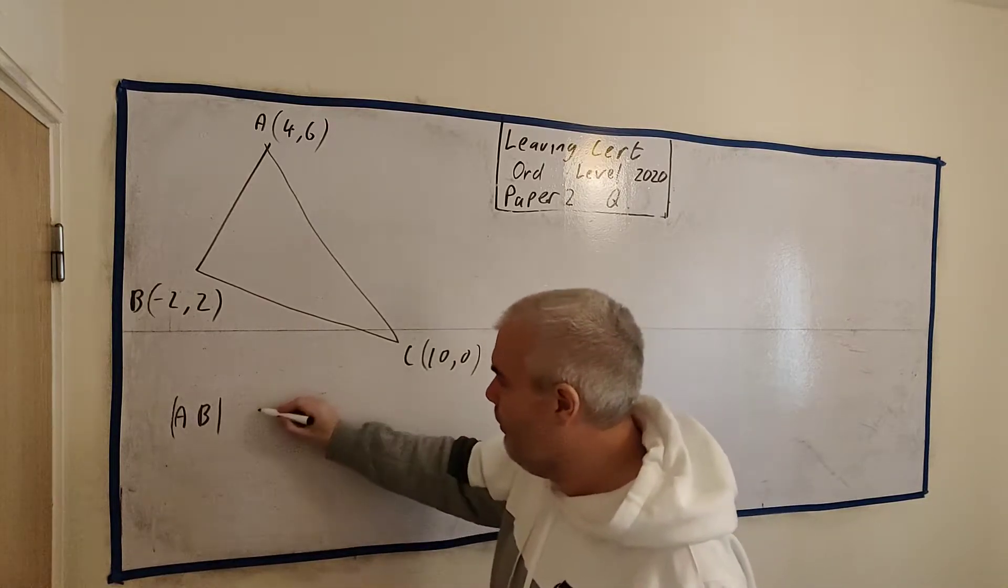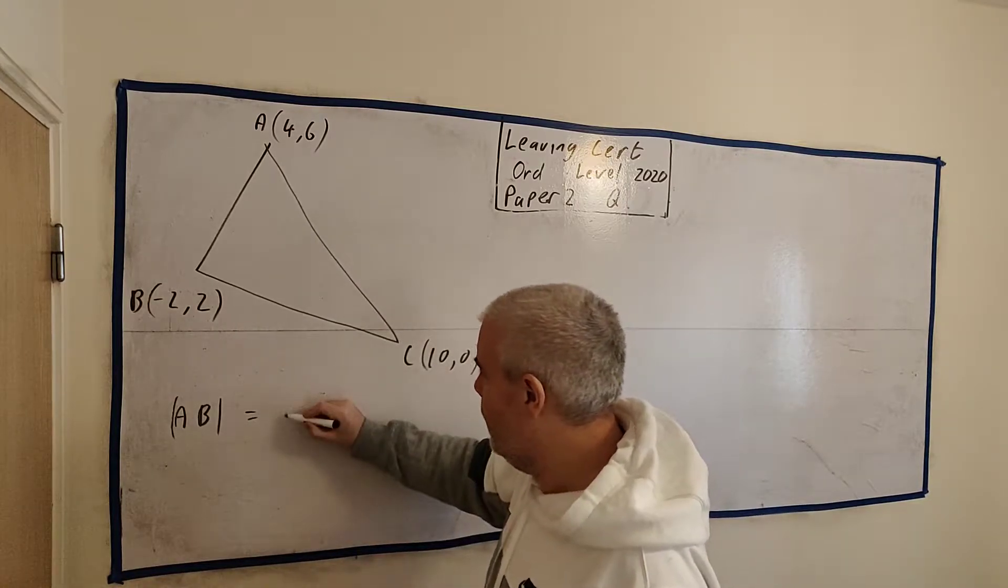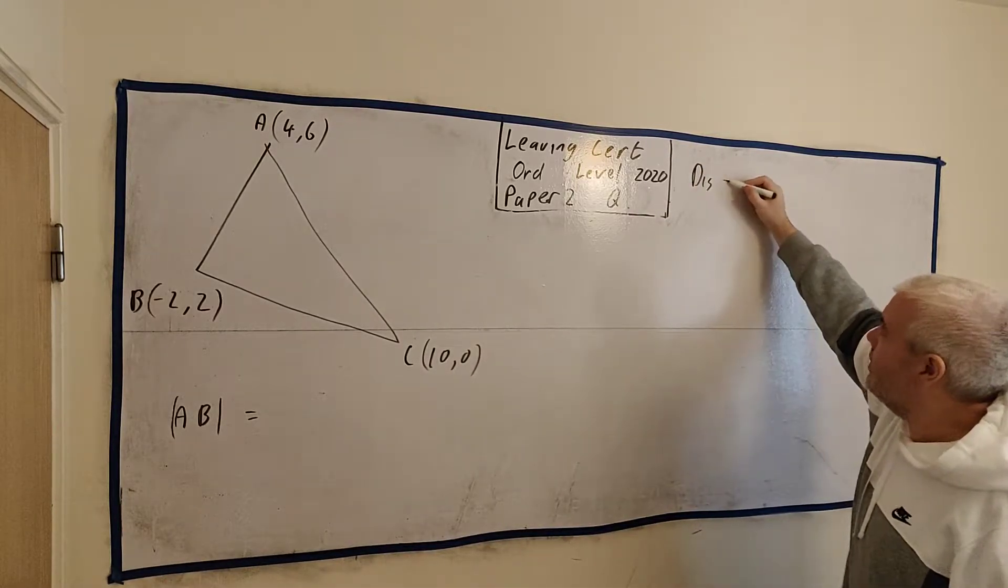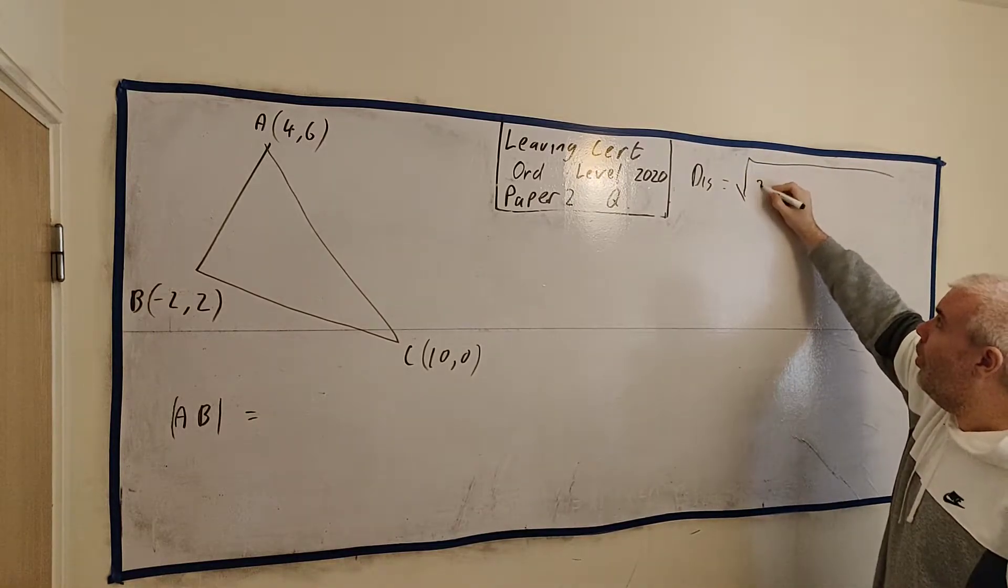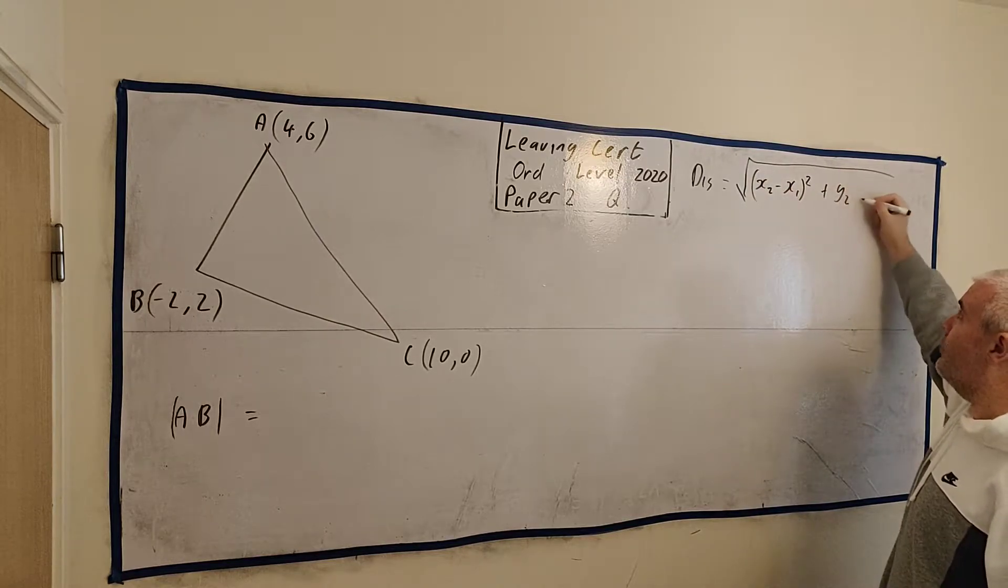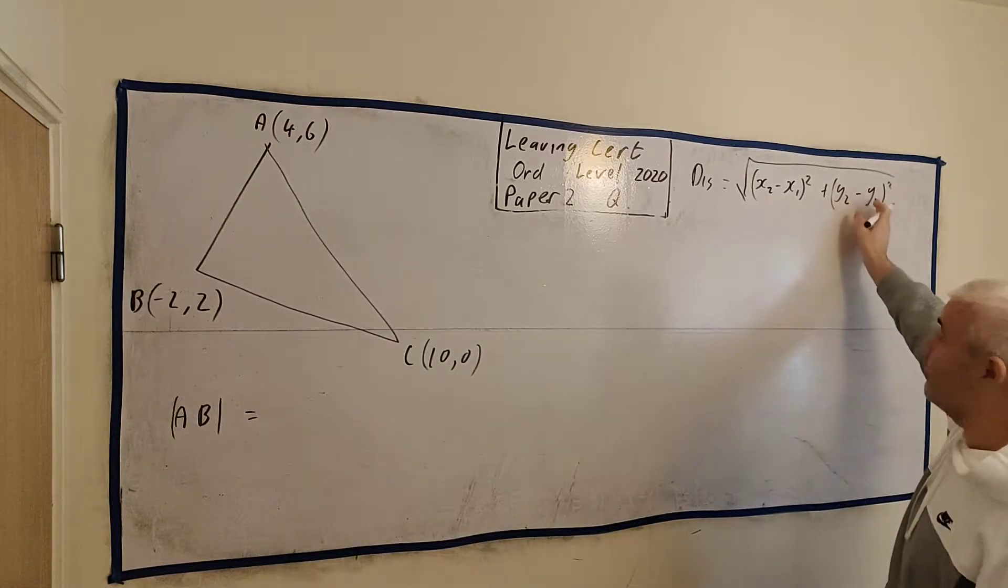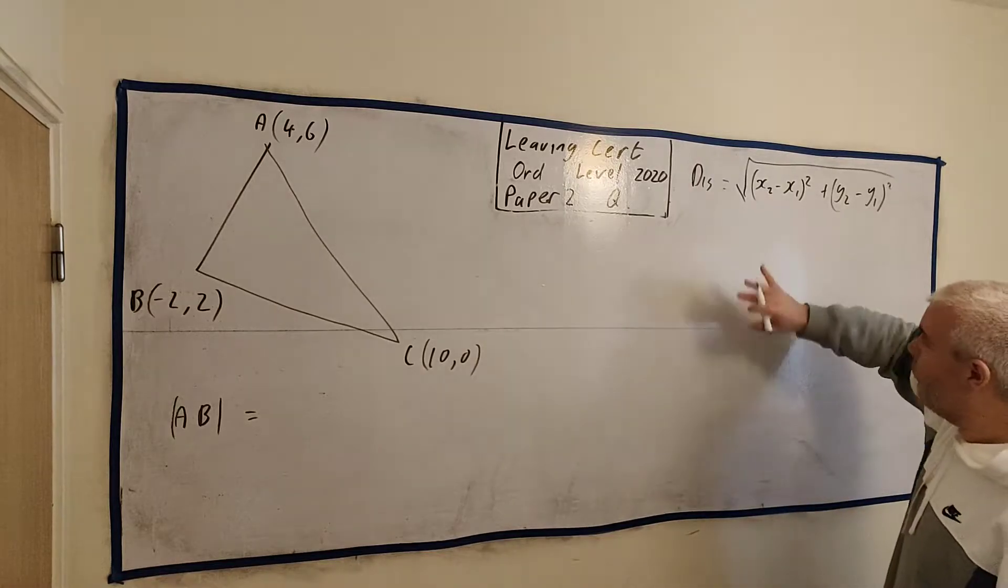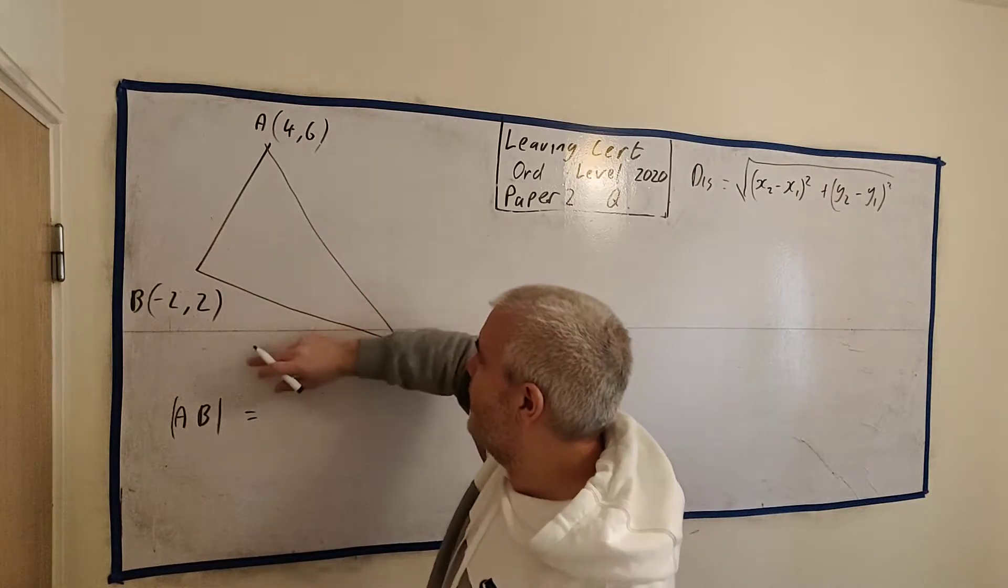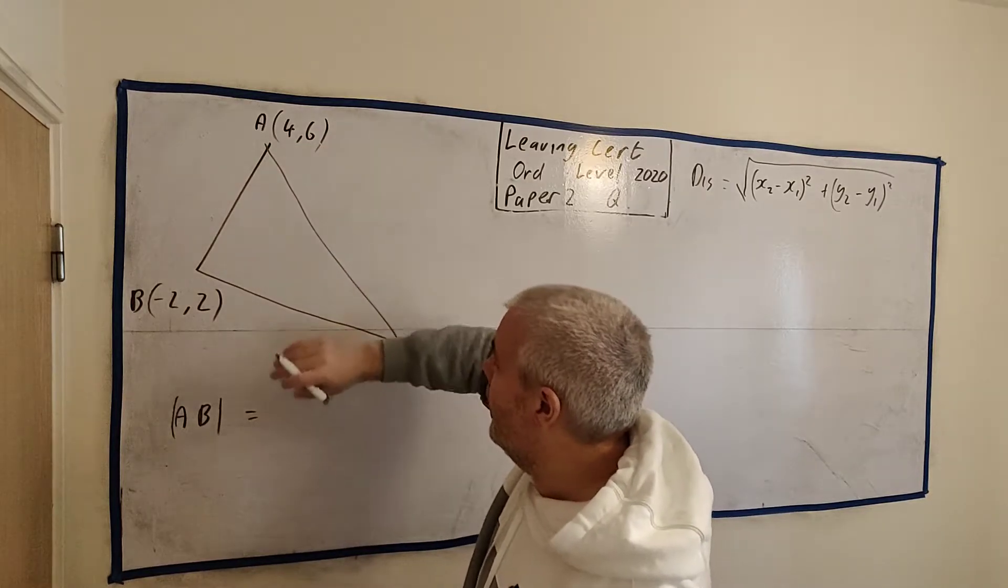I'm going to do this two ways. First, the way most students are happy to do with the formula. We have a formula, I'll write it up here. A formula for distance is the square root of (x2 - x1)² + (y2 - y1)². Or you can mix up 1 and 2 if you want, once you do it to both of them. Or you can put this one first, either way, that's fine. And you put that in, let's do it here. We'll say, we'll call this the x1, y1, and we'll call this x2, y2.